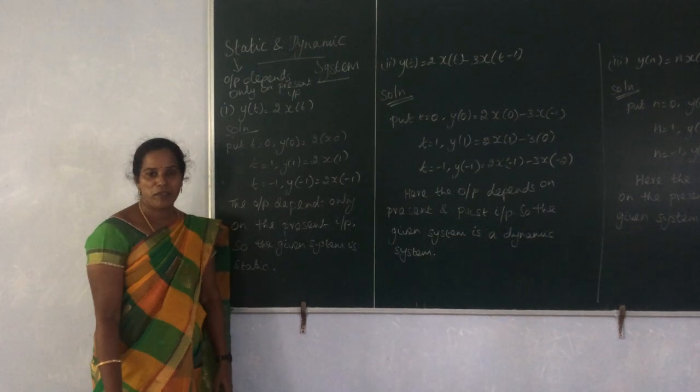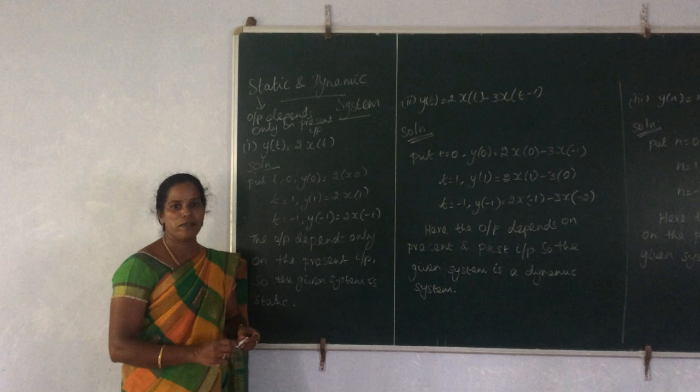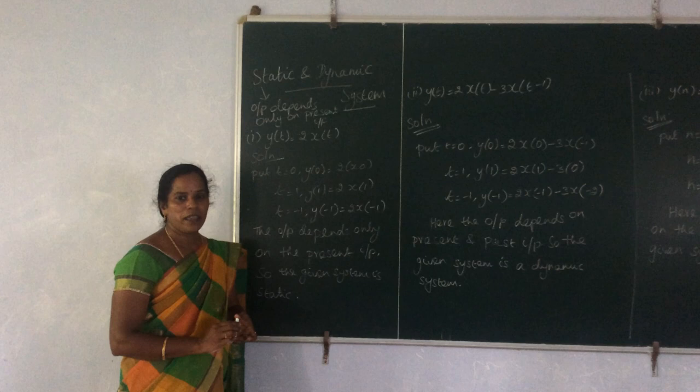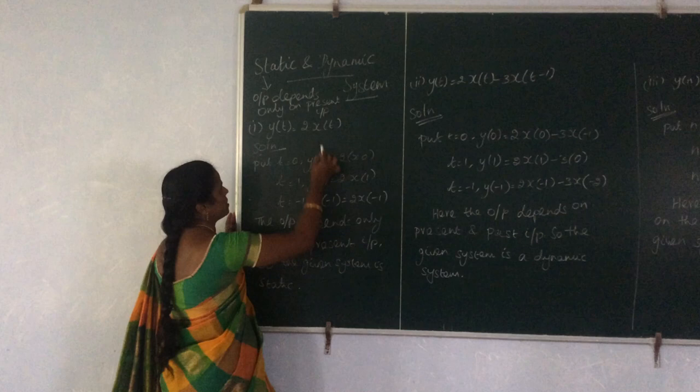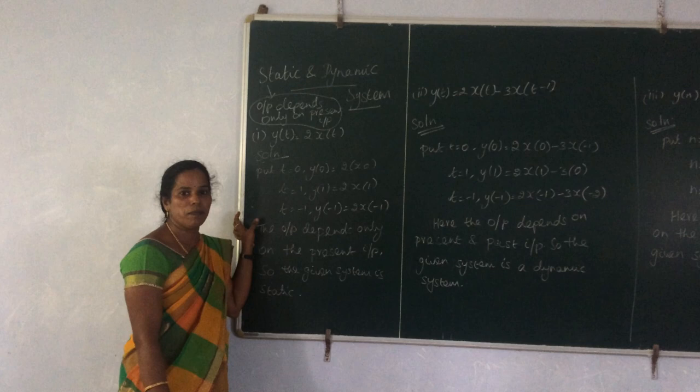Hello everyone. In this video we are going to see how to determine whether a given system is static or dynamic. First you should know what a static system is. If the output of a particular system depends upon only the present input, the system is termed as a static system.